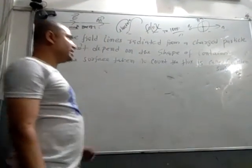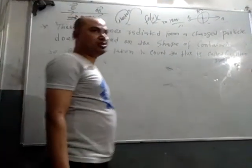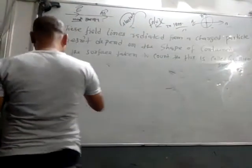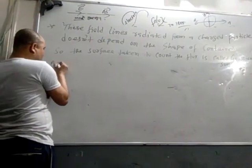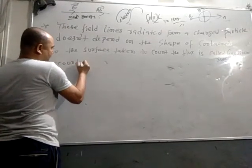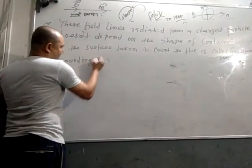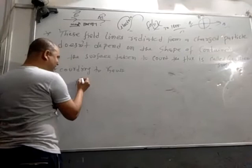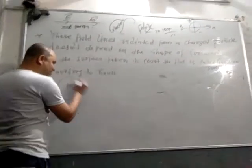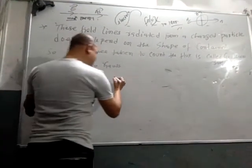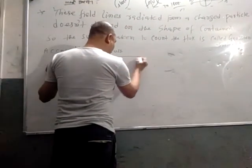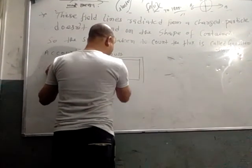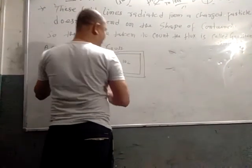According to Gauss's Law: if a 10 Coulomb charge is kept inside a spherical body, and that same 10 Coulomb charge is kept inside a cubical body, the total flux will be the same in both cases. The flux depends only on the enclosed charge, not on the shape of the Gaussian surface.